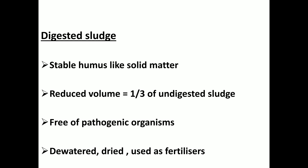The first product is Digested Sludge. Digested sludge is stable and humus-like. It is about one-third of the original sludge volume. Undigested sludge contains pathogenic organisms, so it is a health problem. Digested sludge has fewer pathogenic organisms and is safer.